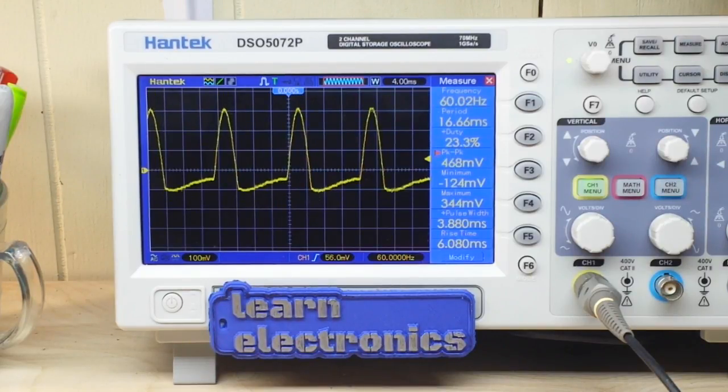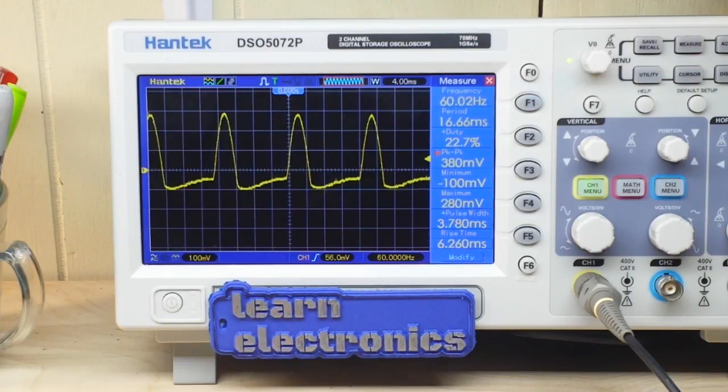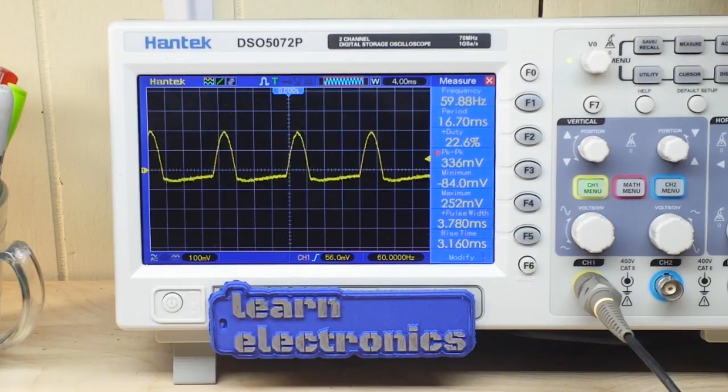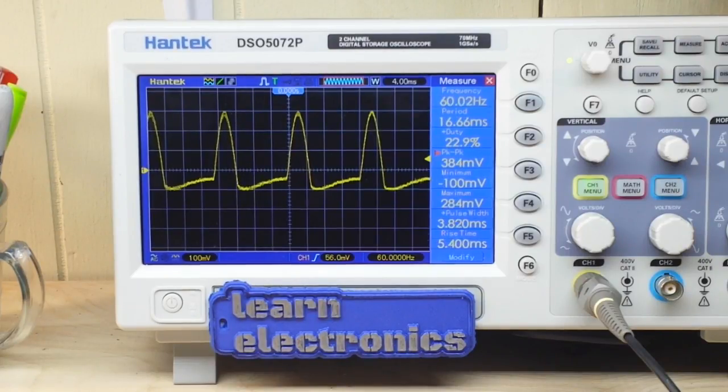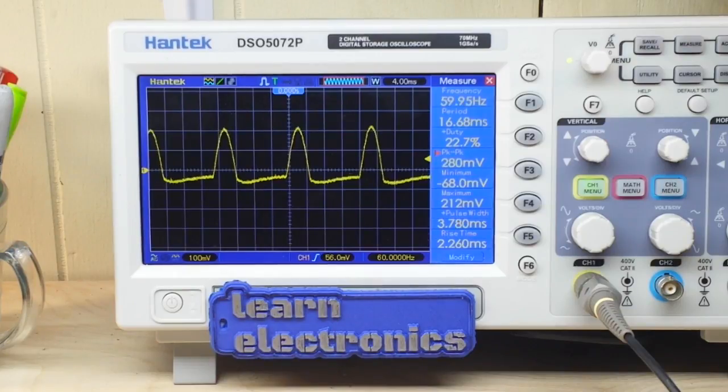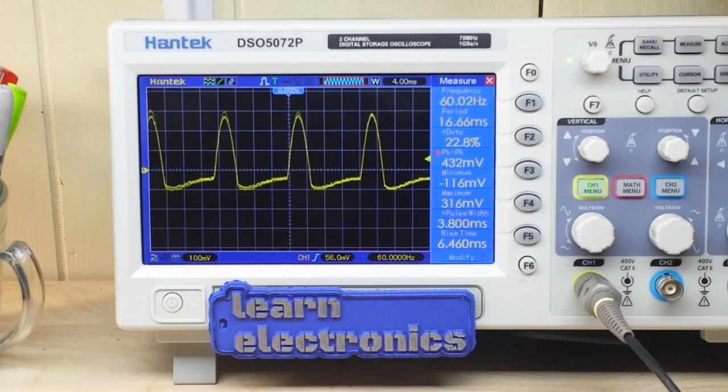And all we are seeing is the AC component. So all this mess that you're seeing on the scope here is just the AC part of the signal riding on top the DC part of the signal, very useful to see that in a lot of circuit applications.